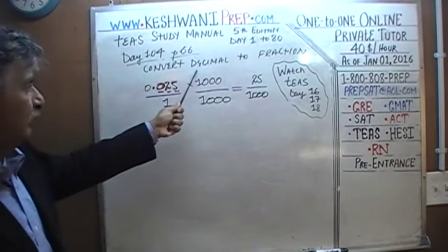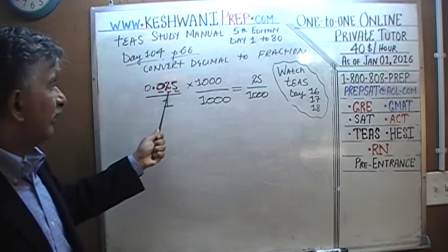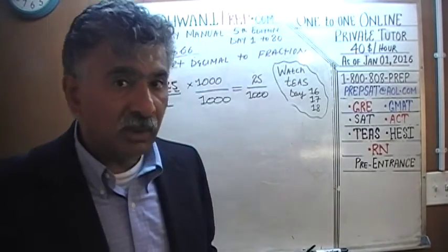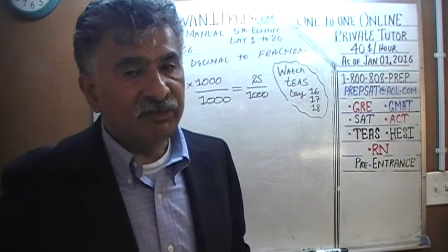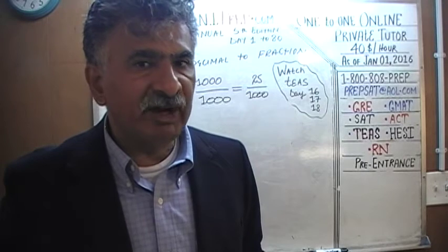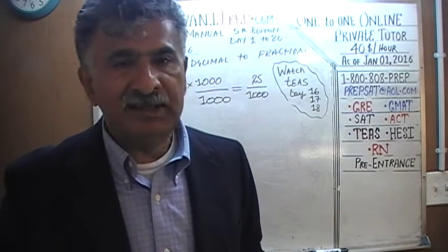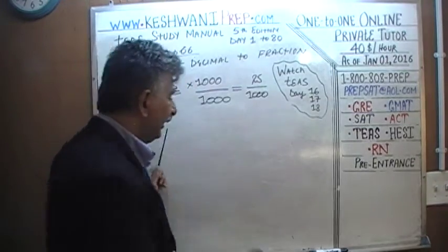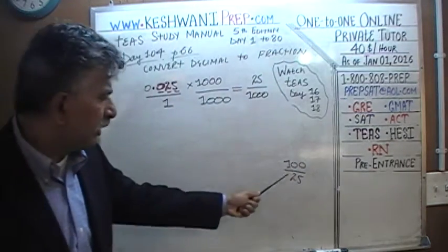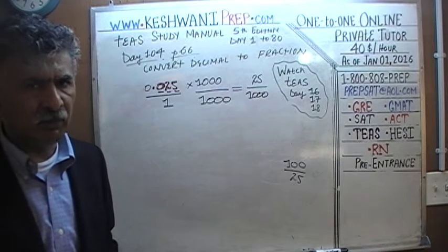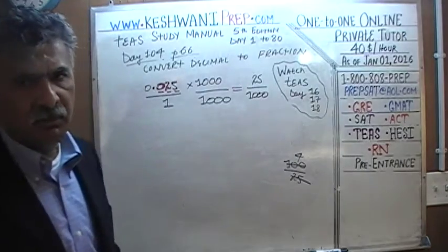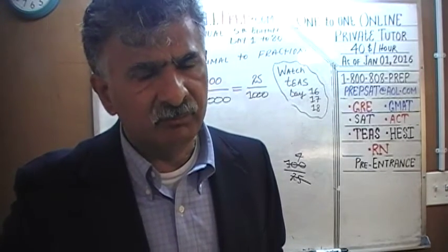Have we converted our decimal into a fraction? Yes — we have converted it to 25 over 1,000. But are we done? No. The convention declares that a fraction must be presented in its most reduced form. We cannot tell somebody the price of the banana is 100 over 25 — that is silly. Divide top and bottom by 25 and tell me the price is $4. The fraction must be reduced.